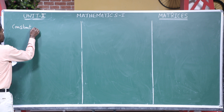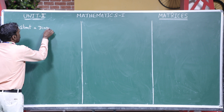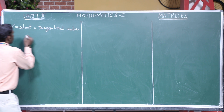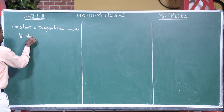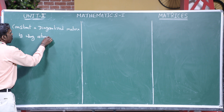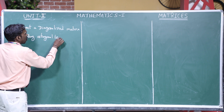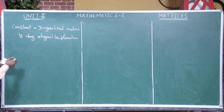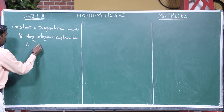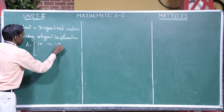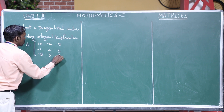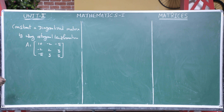This is our question: we have to construct a diagonalized matrix by using orthogonal transformation. The given matrix A is equal to: first row 10, -2, -5; second row -2, 2, 3; third row -5, 3, 5.